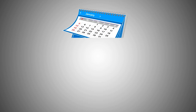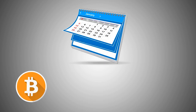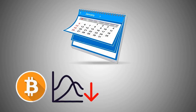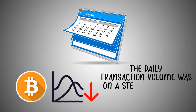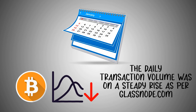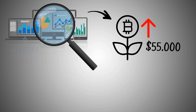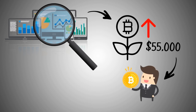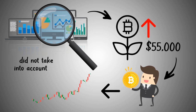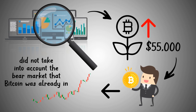In January of 2019, Bitcoin hit the lowest point in terms of prices, while the daily transaction volume was on a steady rise, as per glassnode.com. After many crypto market analysts predicted the future value of Bitcoin would go up to $55,000 after the May 2020 halving event, Willy Woo reminded Bitcoin traders that this bold prediction based on the stock-to-flow model did not take into account the bear market that Bitcoin was already in — and he did so using the on-chain analysis.